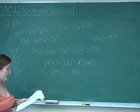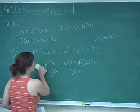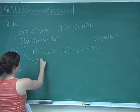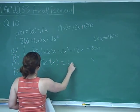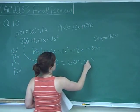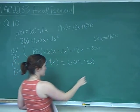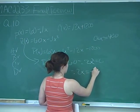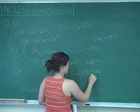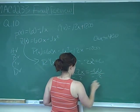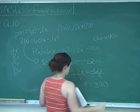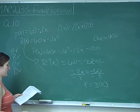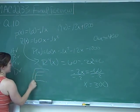Statement E says revenue is maximized when 200 items are sold. Our revenue function is R(X) = 60X - 0.1X². Taking the derivative: R'(X) = 60 - 0.2X. Setting it equal to 0 and solving: 0.2X = 60, so X = 300. Revenue is maximized when 300 items are sold, not 200. So statement E is incorrect, and the answer is E.